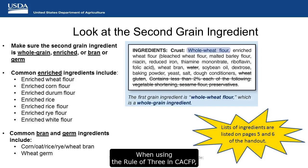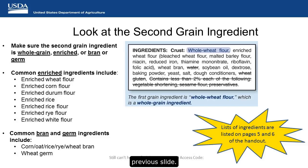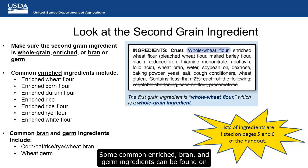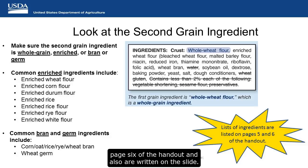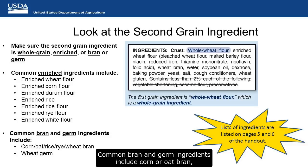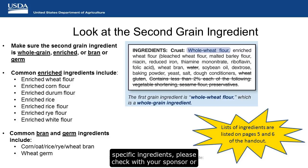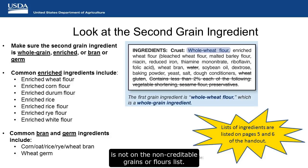Let's look at the second grain ingredient. When using the rule of three in CACFP, the first grain ingredient must be whole grain, and the second grain ingredient can be whole grain, enriched, bran, or germ. Some common enriched, bran, and germ ingredients can be found on page 6 of the handout. We're talking about ingredients such as enriched wheat flour, enriched corn flour, and enriched rice flour. Common bran and germ ingredients include corn or oat bran, as well as wheat germ. Again, make sure the second grain ingredient is not on the non-creditable grains or flours list.